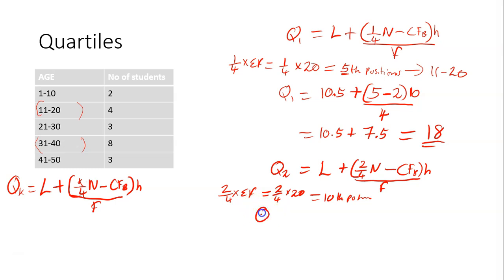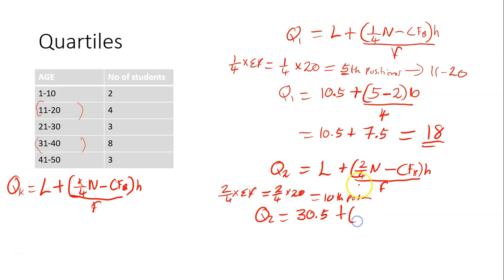To get the second quartile, L means the lower class boundary of the second quartile class. This is the second quartile class. The lower class boundary is 30.5. Plus, 2 over 4 N is the same as 2 over 4 sigma F, which was 10.